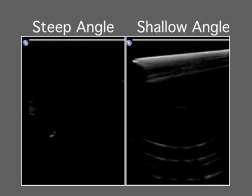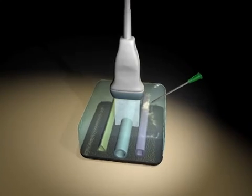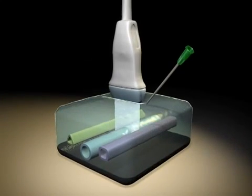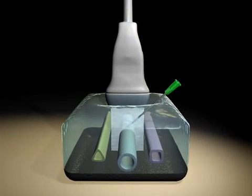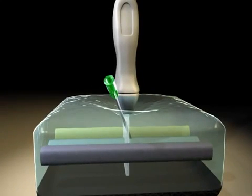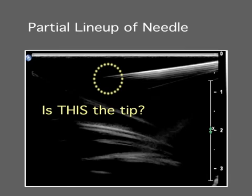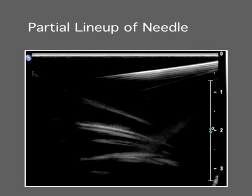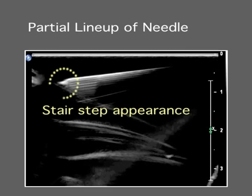The next set of problems occurs when the needle trajectory strays from the plane of imaging. If the needle crosses the plane of imaging but does not completely lie within it, only a portion of the needle will be seen. This can give a false impression of needle depth that can lead to complications. Alignment issues can often be addressed by leaving the needle stationary and manipulating the transducer until the tip of the needle is imaged. The needle bevel has a characteristic stair-step appearance that should be sought out.